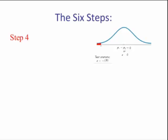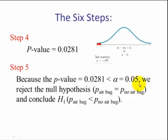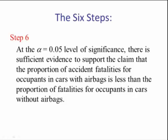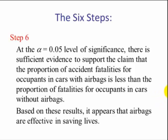So step four, from Minitab and StatCrunch, we see that the p-value is 0.028. This is from Table 5, 0.0281. We have our picture with our left tail. So step number five, because our p-value is less than alpha, we reject the null and we conclude the alternative that the proportion of airbags is statistically less than the proportion of no airbags. So step number six, at the alpha equals 0.05 level of significance, there is sufficient evidence to support the claim that the proportion of accident fatalities for occupants in cars with airbags is less than the proportion of fatalities for occupants in cars without airbags. Based on these results, it appears that airbags are effective in saving lives.